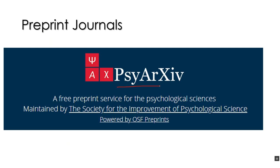In psychology, one of the major preprint services is PsychRXIV — a free preprint service for the psychological sciences. If you run across anything from PsychRXIV, you know it's a preprint. It has not been peer reviewed, so it's not part of the gold standard of primary, empirical, peer-reviewed research.